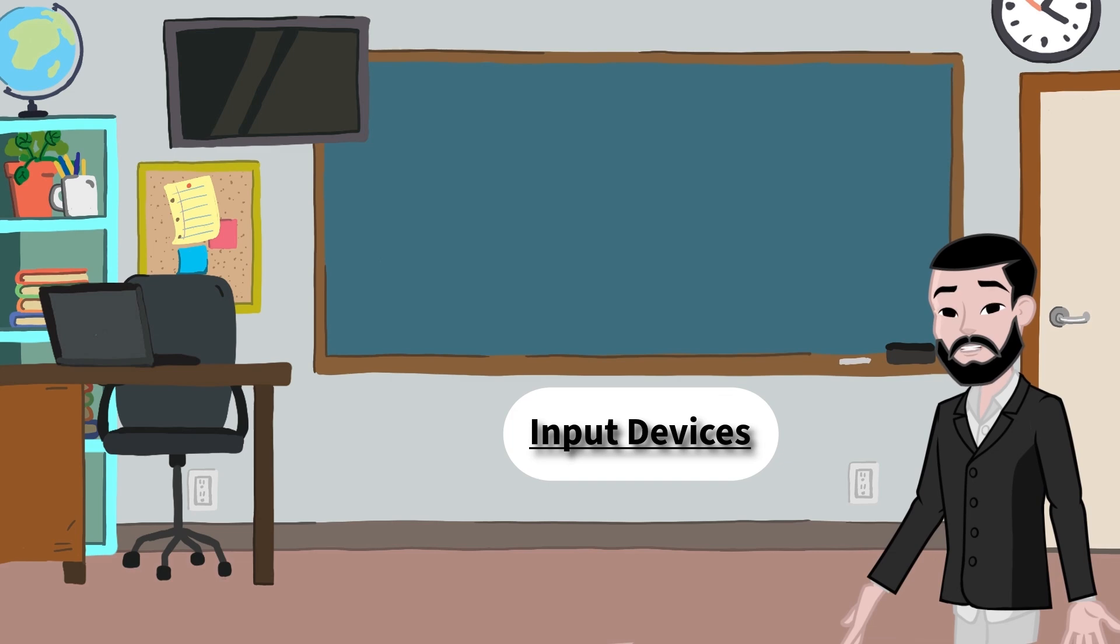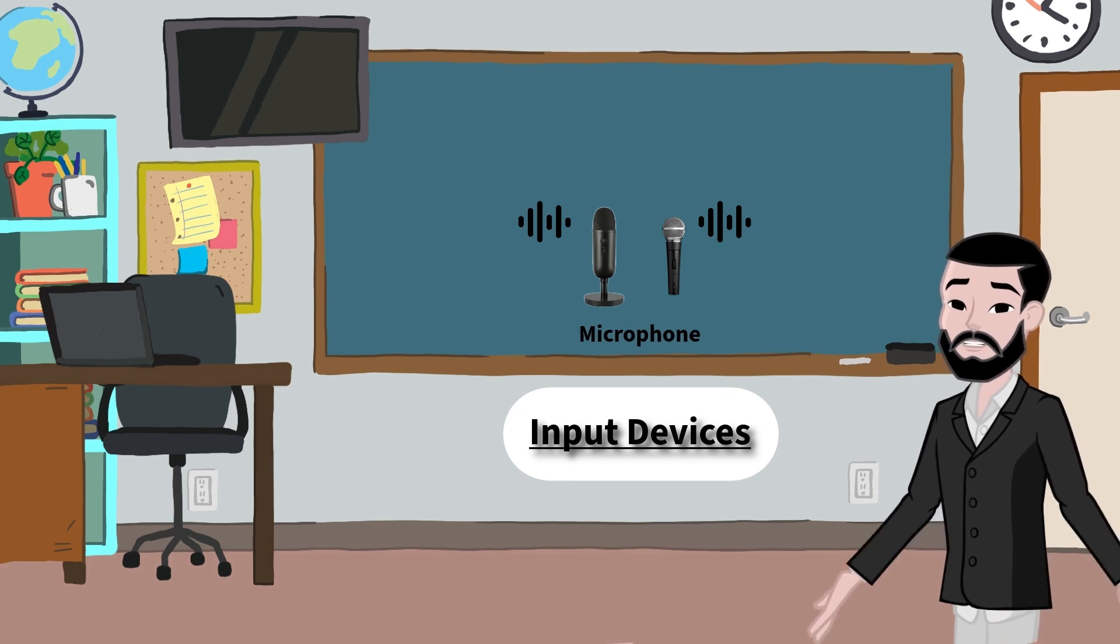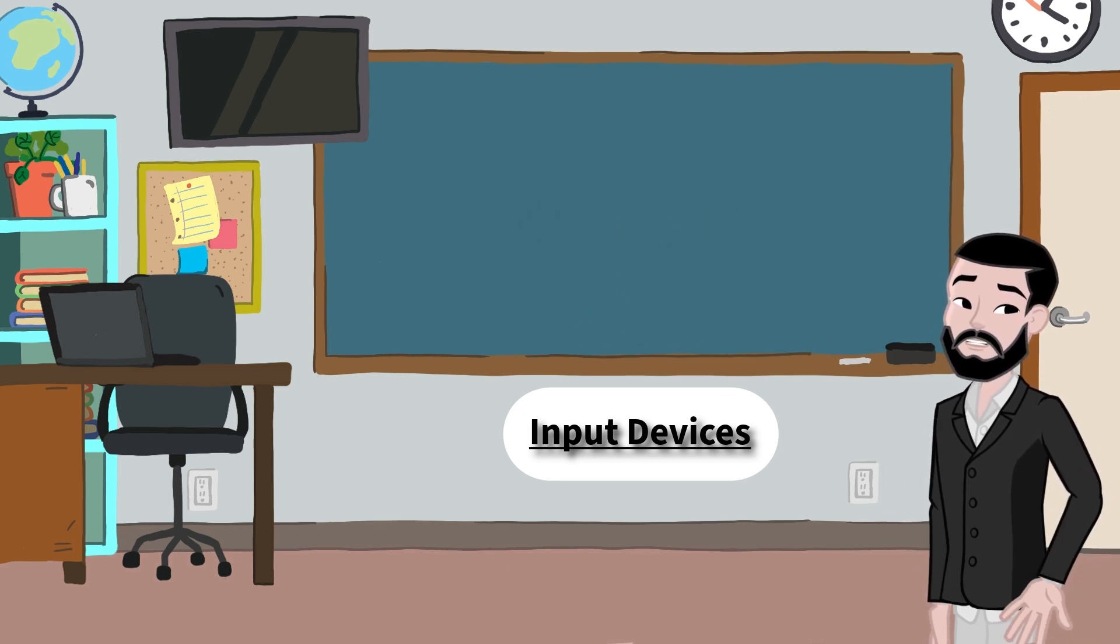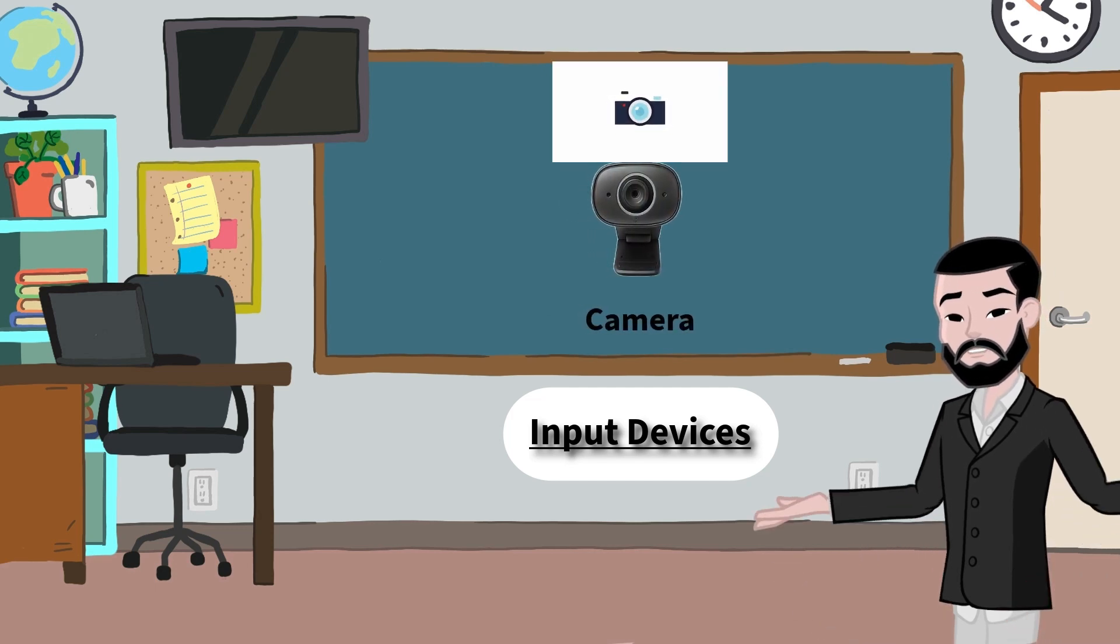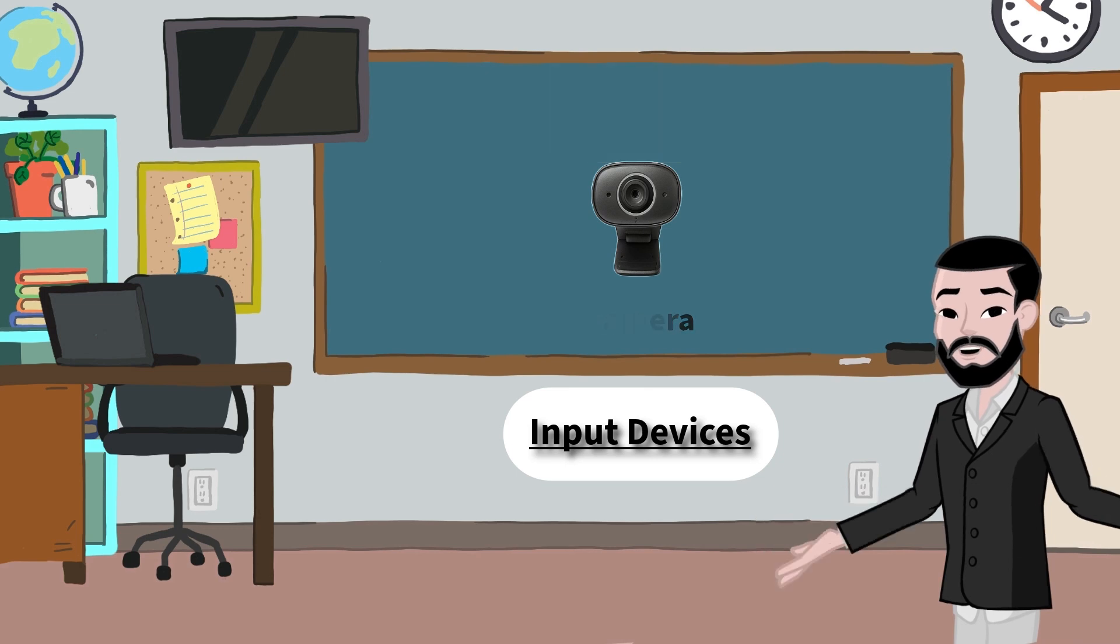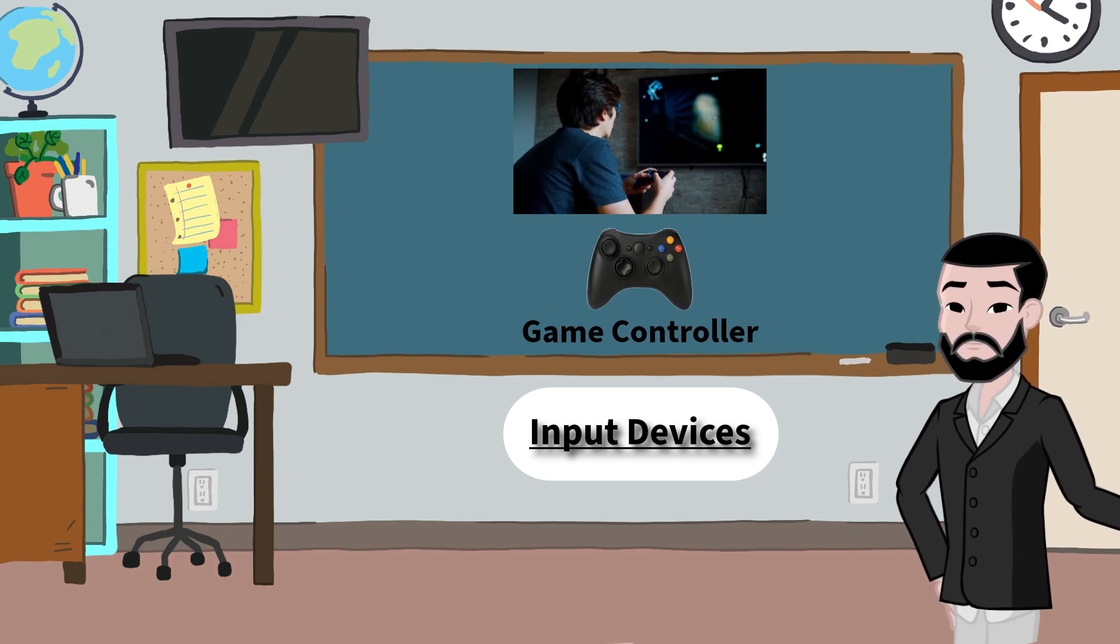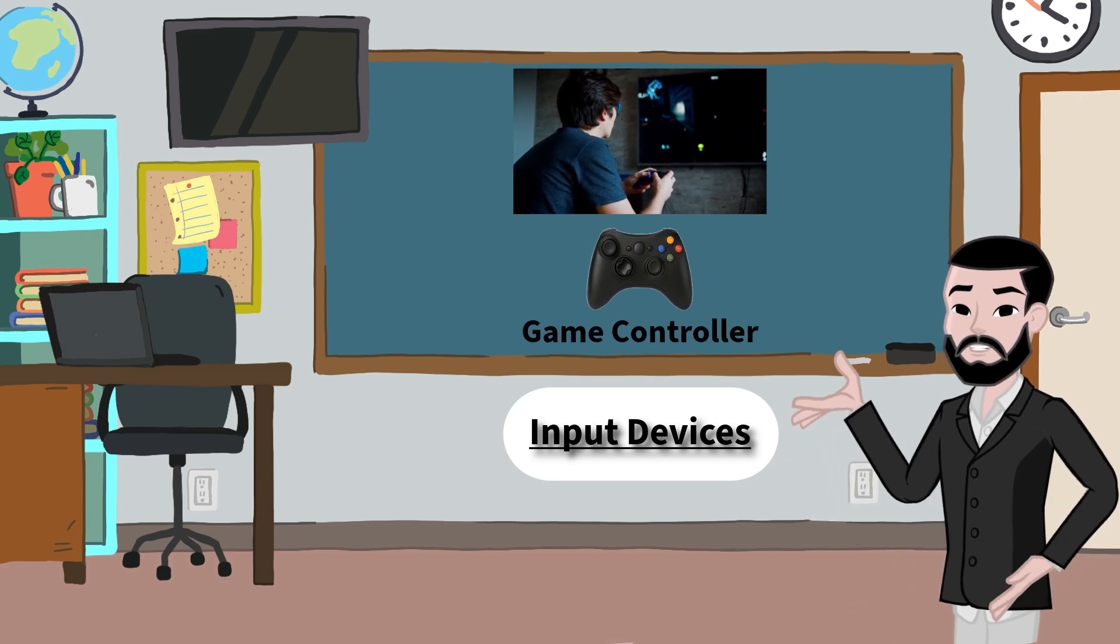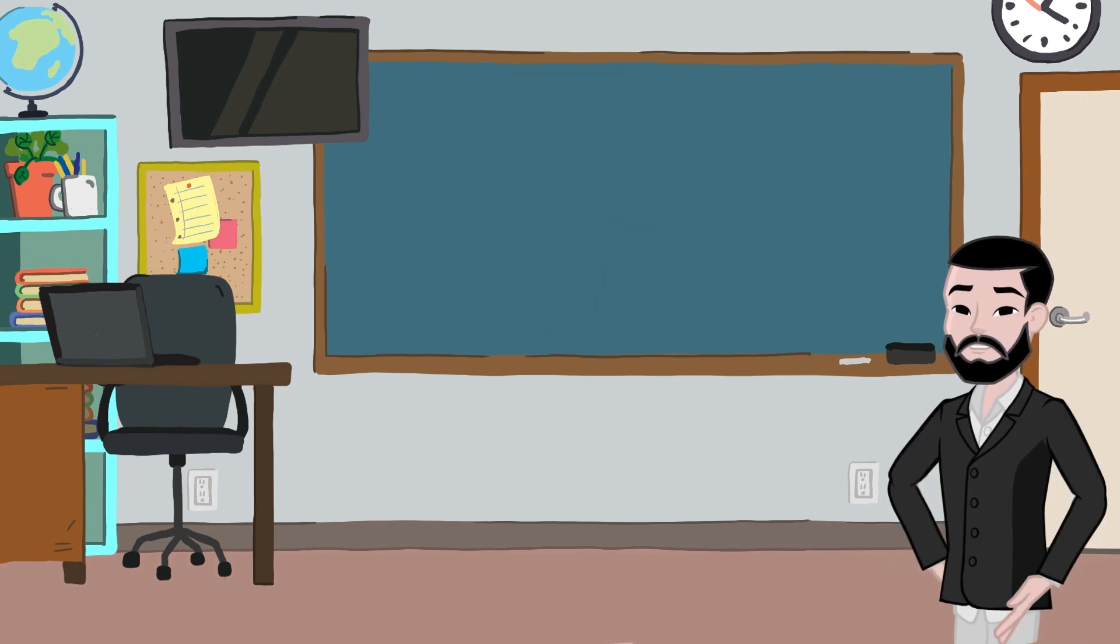Other input devices include the microphone, which lets you speak into the computer. It turns your voice into digital signals. Then there's the camera or webcam which takes pictures or video of you. You've probably used it for video calls or selfies. And don't forget the game controller. It's made for fun. When you press buttons or move the joystick, your character jumps, runs, or flies, all thanks to input signals.